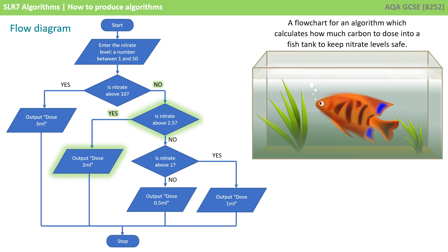If not, is the nitrates above 2.5, and if they are, output 2 mils. And if they're not, is the nitrates above 1, and if it is, dose 1 mil. And if it's not, dose half a mil before coming to a stop.